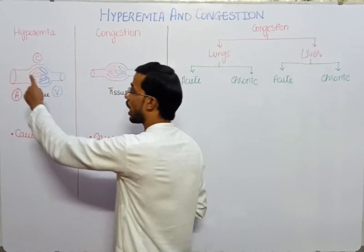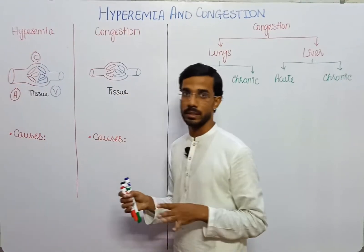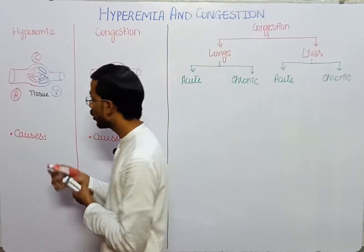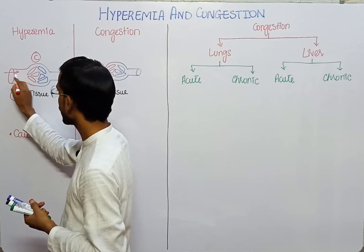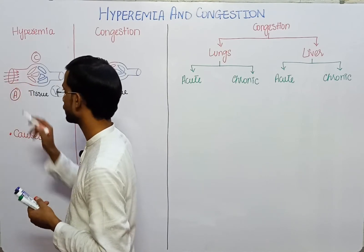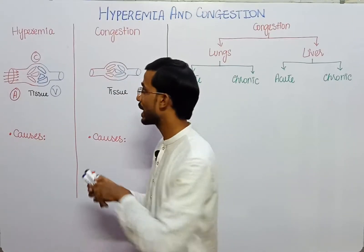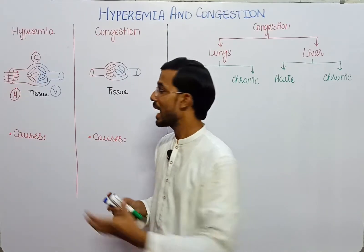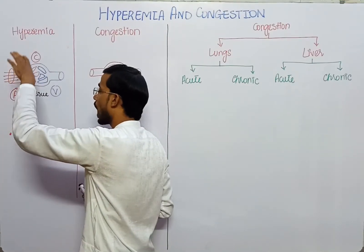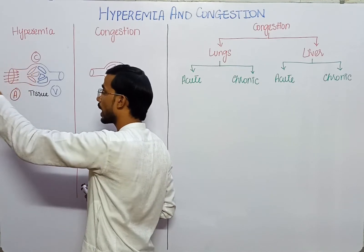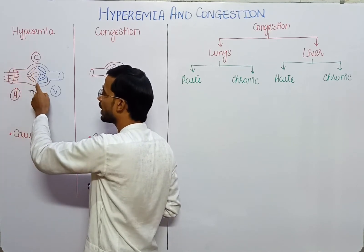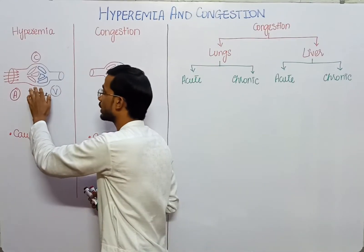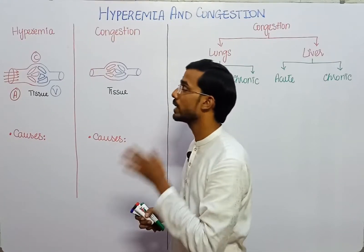When the arterioles dilate due to any reason, then a lot of blood will flow into the capillaries. As we know, the capillaries are usually present in the tissues. If the blood flow in the arterioles ends, then the blood will retain in the capillaries and this condition is called hyperemia.